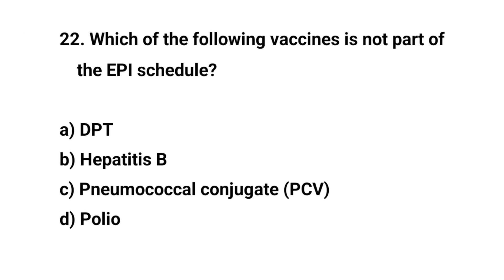Question number 22. Which of the following vaccines is not part of the EPI schedule? The right answer is C: Pneumococcal conjugate.